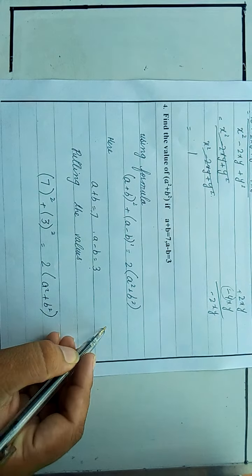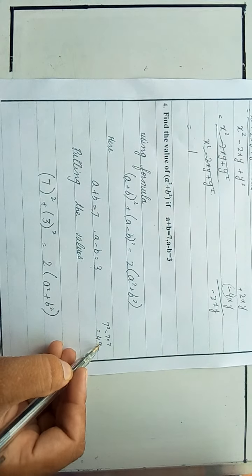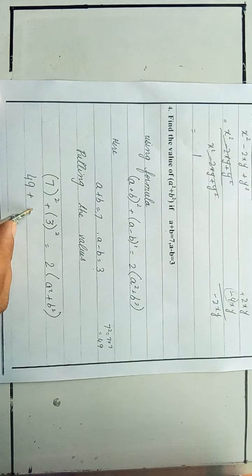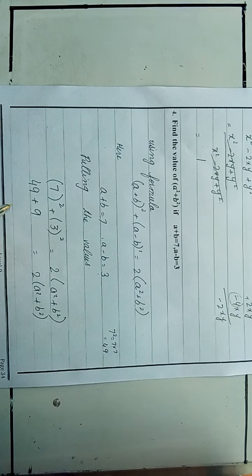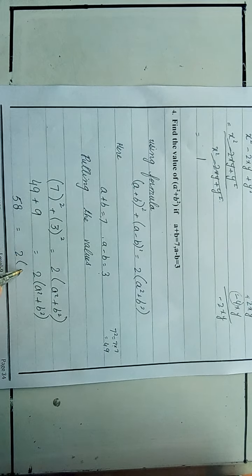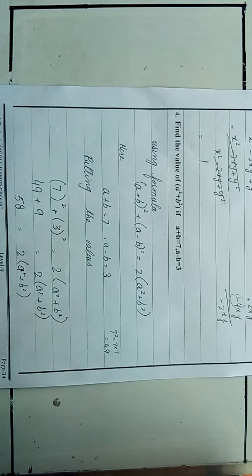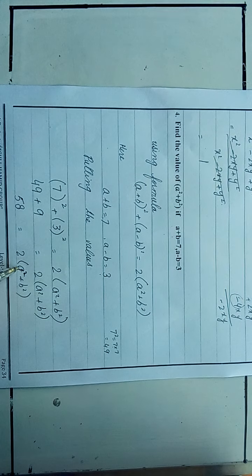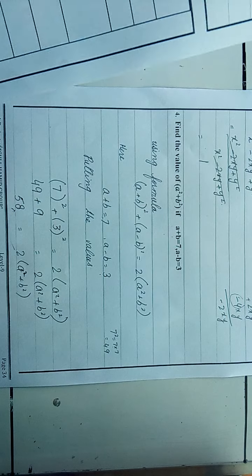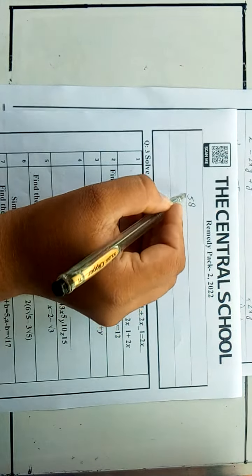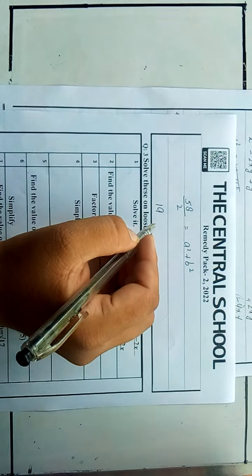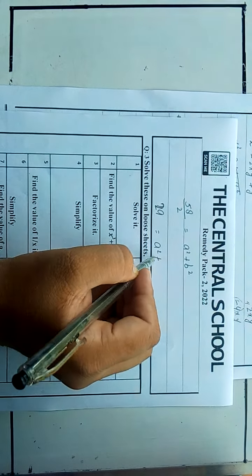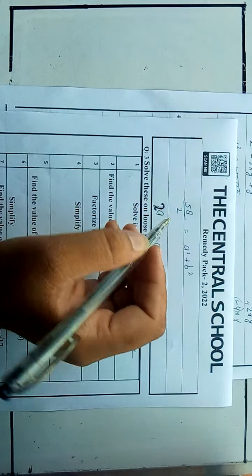58 divided by 2 equals a²+b², so a²+b² = 29. This is the answer to the required question.